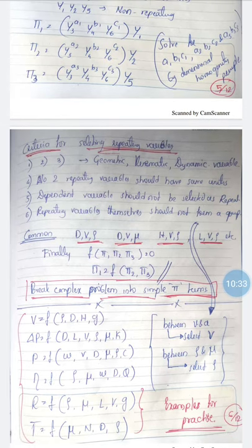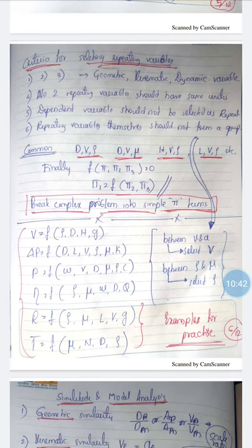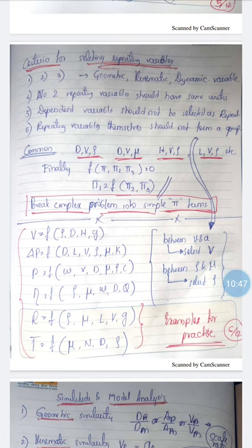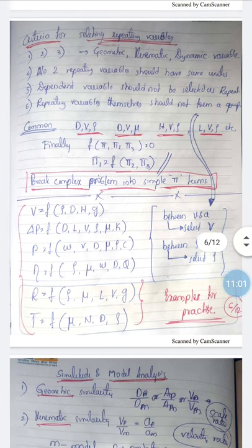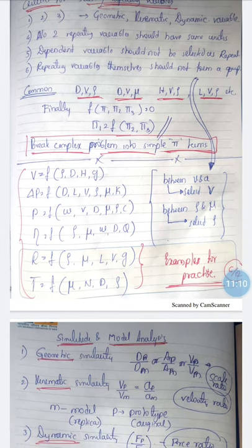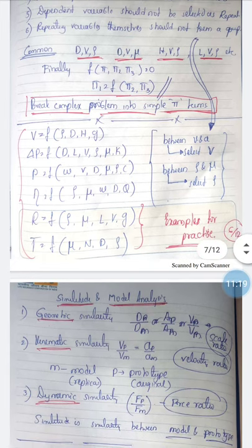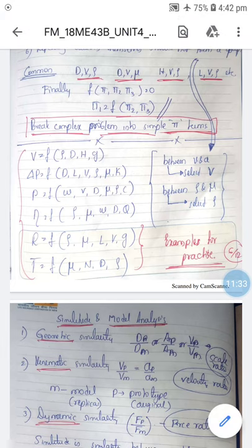Criteria for selecting repeating variables: one should have a geometric property, one kinematic, one dynamic. No two repeating variables should represent the same property. The dependent variable must never be selected as a repeating variable. The repeating variables themselves must not form a dimensionless group on their own. Commonly used repeating variable sets are: D (diameter), V (velocity), ρ (density) — representing geometric, kinematic, and dynamic parameters. If both velocity and acceleration appear, select velocity as it has fewer units.